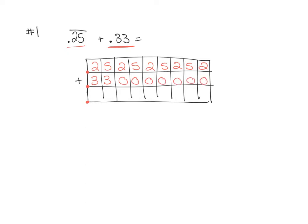Then we're going to add starting on the right-hand side. So 2 plus 0 is 2, 5 plus 0 is 5, and this pattern continues until 5 plus 3 is 8, and 2 plus 3 is 5. So if we were to write this out, we have the 5 and 8 that aren't repeating, and then we have groupings of 2, 5 that repeat. So we just put a repeating sign over the 2, 5 at the end.